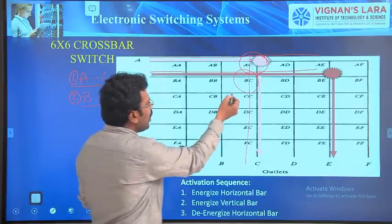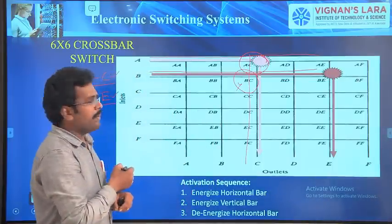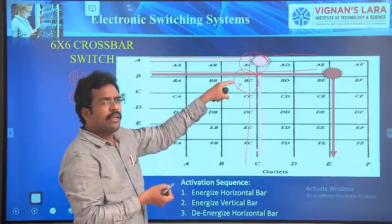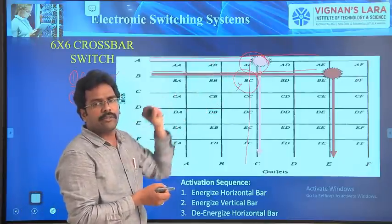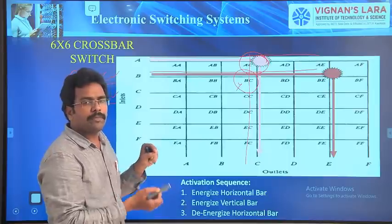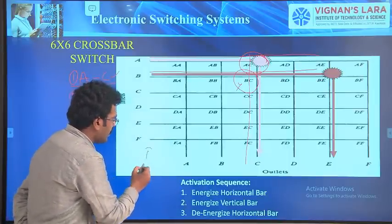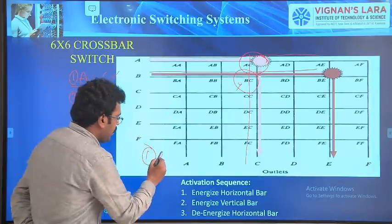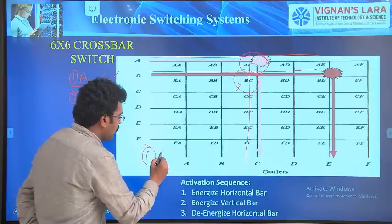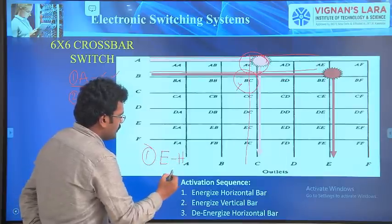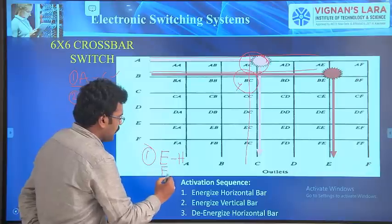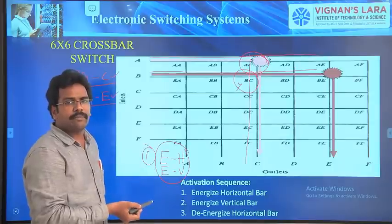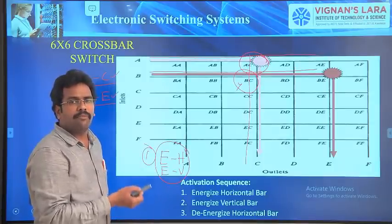So, how to overcome this problem? Our objective is to establish a connection between B and E, but unexpectedly we are getting V into the AC circuit. To overcome this problem, we have to define some conditions. For proper latch-up: first, enable horizontal; then, enable vertical. If this order is followed, then only the latch-up takes place. If not, the latch-up will not take place.